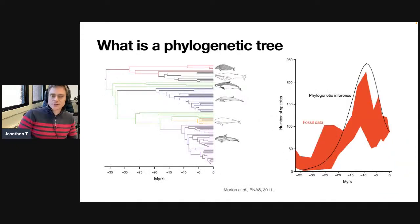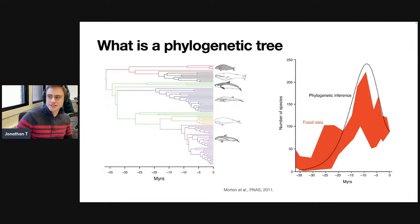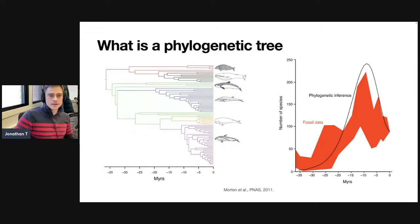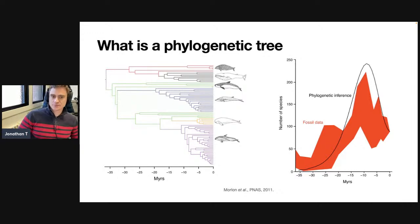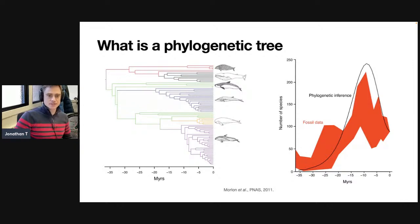The last time I gave this talk was to a math department, so I had a slide asking 'what is a phylogenetic tree?' — obviously not necessary for this seminar. We're thinking about phylogenies; in this talk, we'll assume they're basically ultrametrics, so we have data that were all sampled at the present at time zero. I'm interested in estimating parameters that govern the distribution of this tree, viewing the tree as a random object, and trying to infer things about the evolutionary processes that generated it.